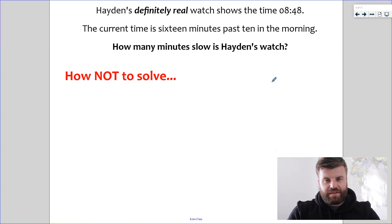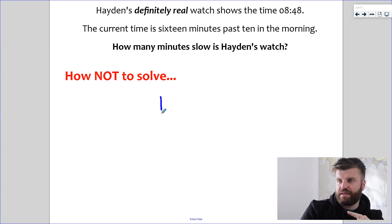So let's jump straight in to question 1. Yeah, that's right. Hayden's definitely real watch shows the time of 8:48. The current time is 16 minutes past 10 in the morning. And the question is, how many minutes slow is Hayden's watch? Now, I'm going to start this off by showing you a common misconception, a common error we see in these questions. And children will look at the difference. They want to know what the time is in between. So they'll write down 16 minutes past 10.